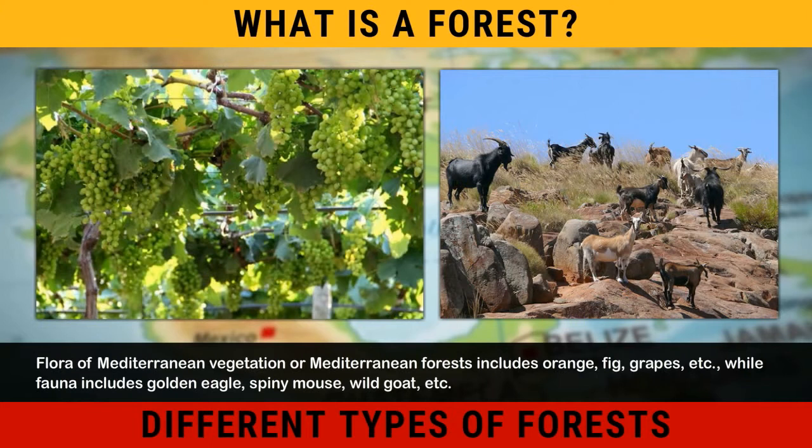Flora of Mediterranean vegetation or Mediterranean forests includes Orange, Fig, Grapes, etc. While fauna includes Golden Eagle, Spiny Mouse, Wild Goat, etc.